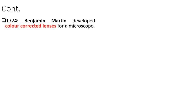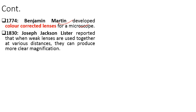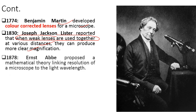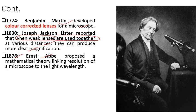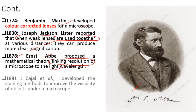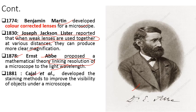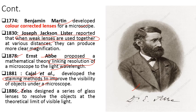In 1774, Benjamin Martin developed color-corrected lenses for the microscope. In 1830, Joseph Jackson Lister reported that when weak lenses are used together at various distances, they can produce clearer magnification. In 1878, Ernst Abbe proposed a mathematical theory linking the resolution of a microscope to the light wavelength. In 1881, Cajal and co-workers developed staining methods to improve the visibility of objects under the microscope. Also in 1886, a series of glass lenses was designed to resolve objects at the theoretical limit of visible light.